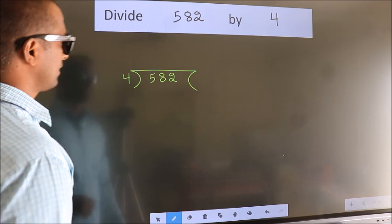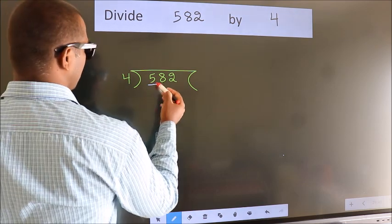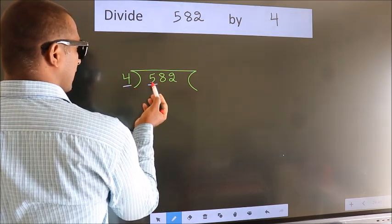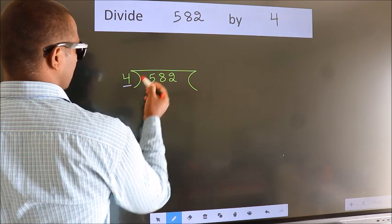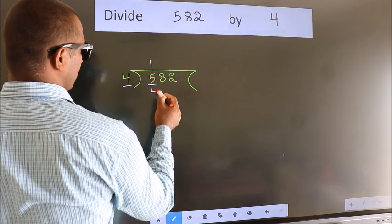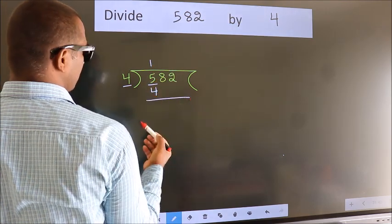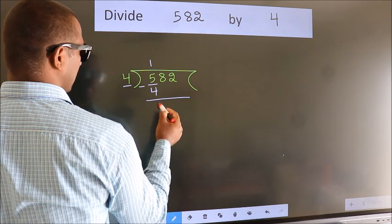Next. Here we have 5, here 4. A number close to 5 in the 4 table is 4 once 4. Now, we subtract. We get 1.